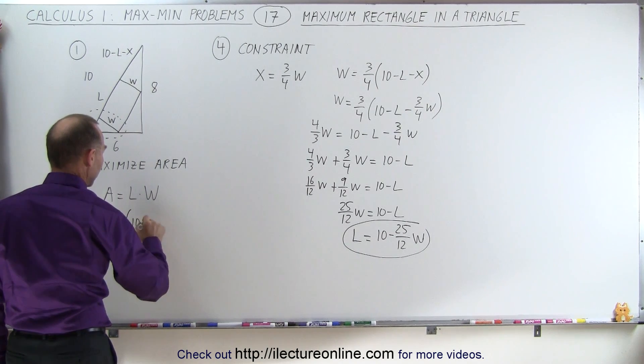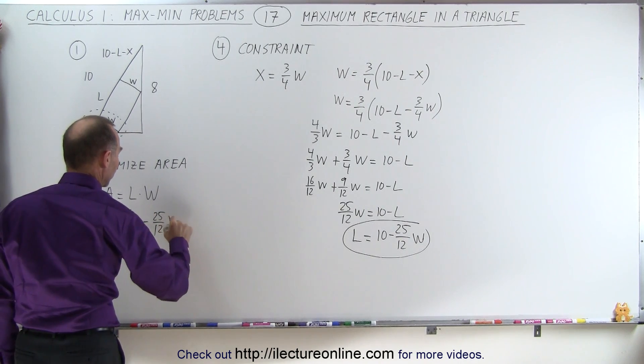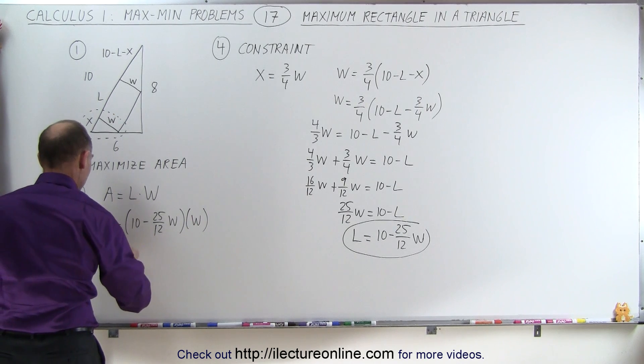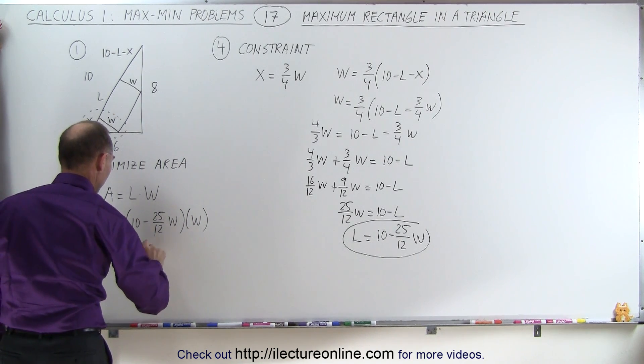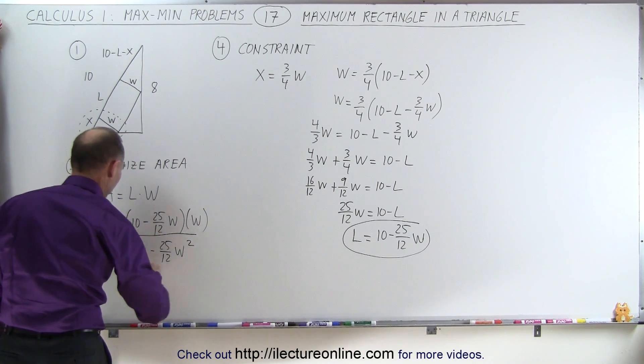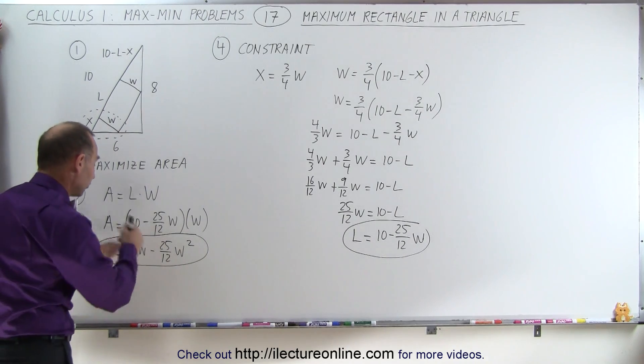So we have A is equal to the quantity 10 minus 25 over 12 W times W. And simplifying this we get A is equal to 10 W minus 25 over 12 W squared.